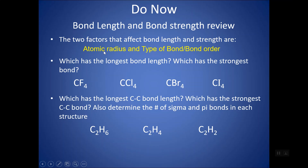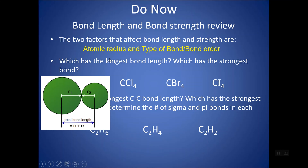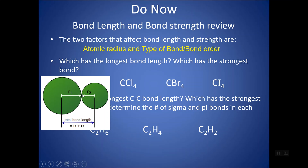Atomic radius is always the number one factor because it makes sense when you think about what bond length is — it's the distance between the two nuclei of the two atoms in the bond. The bigger the radius, the longer the bond length. Single bonds tend to be the longest and weakest, and triple bonds tend to be the shortest and strongest. Putting more electrons between the nuclei cushions the repulsion and allows them to get closer together.